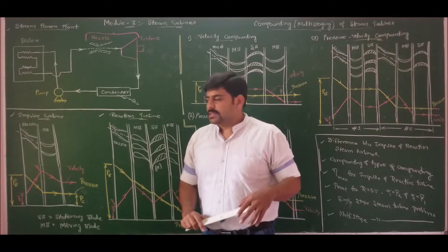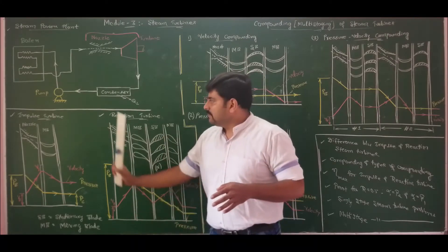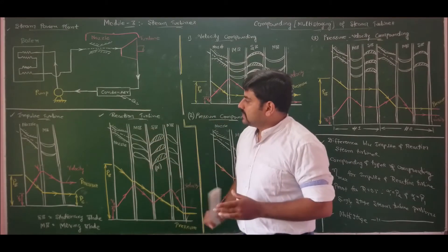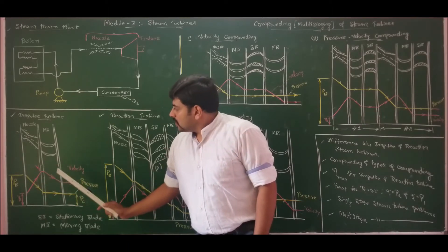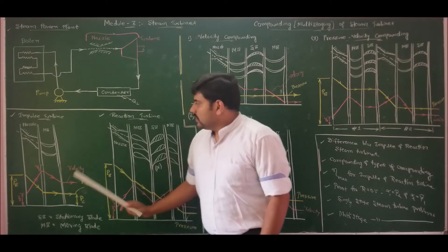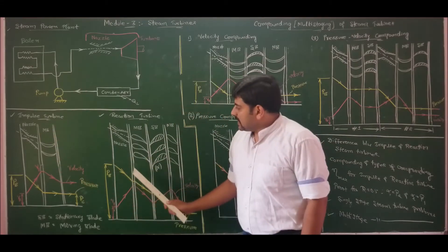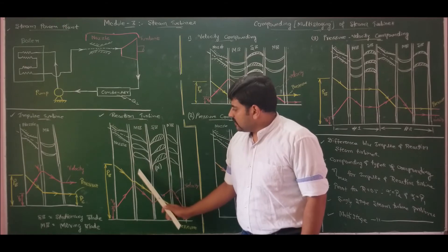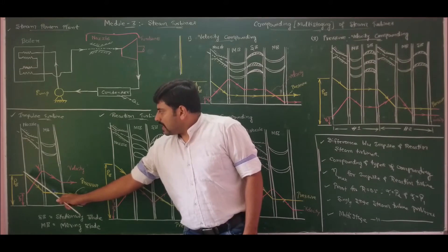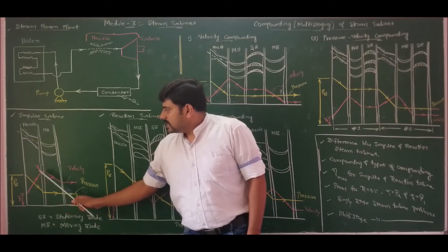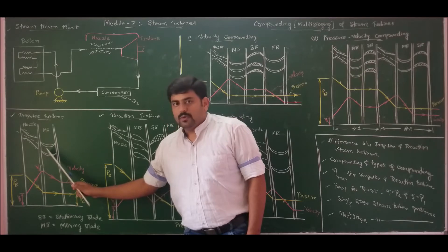Now, coming to the difference between impulse and reaction steam turbines. If you plot the variation of pressure and velocity over the passage length of steam, we observe that steam expands completely in the nozzle in the case of impulse turbine. Whereas for reaction turbine, steam expands partially in the nozzle and the remaining expansion takes place in the moving blades. When steam passes through the nozzle, since a pressure drop is observed, the velocity increases. The exit of the nozzle is the inlet for the moving blades or rotor.